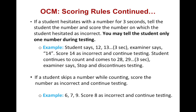If a student hesitates with a number for three seconds, tell the student the number and score the number on which the student hesitated as incorrect. You may tell the student only one number during testing. For example, a student says 12, 13, and then hesitates for three seconds; the examiner says 14, scores 14 as incorrect, and continues testing. If the student continues to count and comes to 28, 29, and then hesitates again for three seconds, the examiner says stop and discontinues testing. If a student skips a number while counting, score the number as incorrect and continue testing — for example, 6, 7, 9; score 8 as incorrect and continue testing.